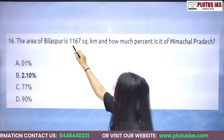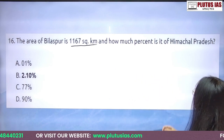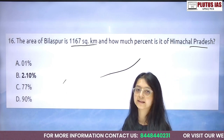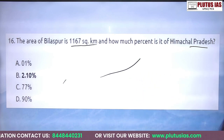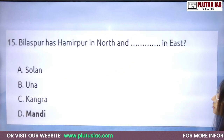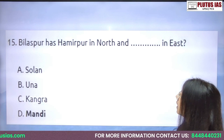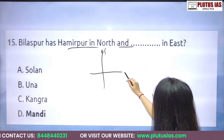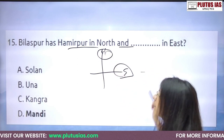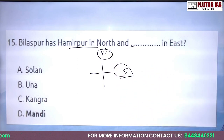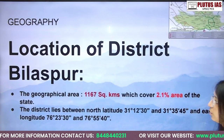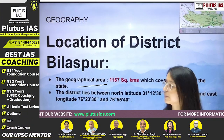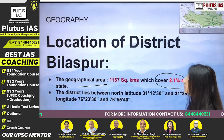The area of Bilaspur is 1167 square kilometers. You have to know what percentage of Himachal Pradesh this covers. The geographical area of Bilaspur is 1167 square kilometers, and it covers 2.1 percent of the area of the state.